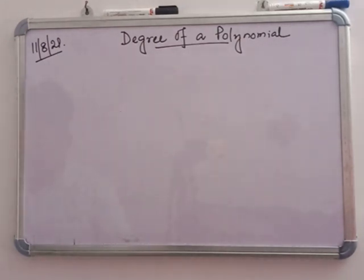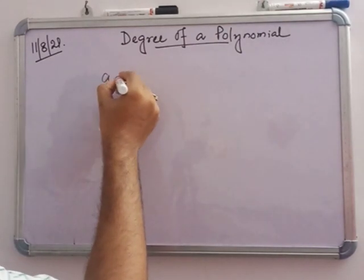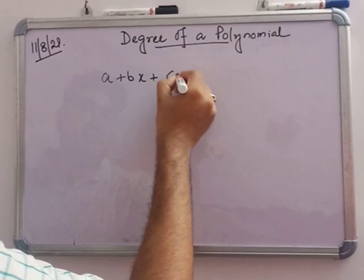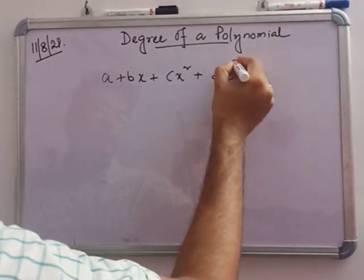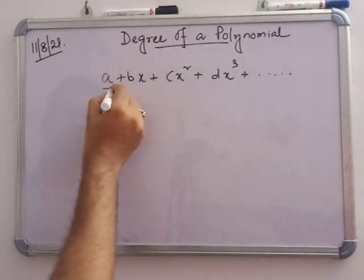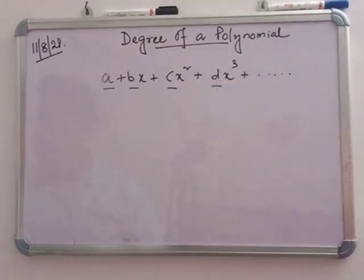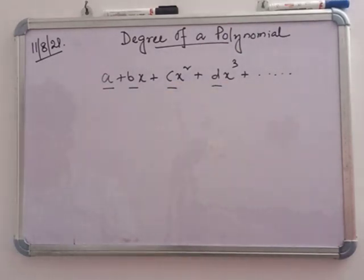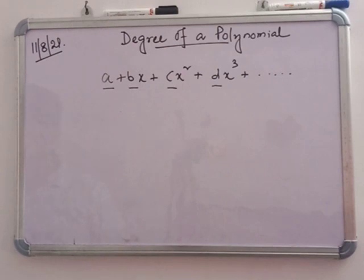An algebraic expression of the form A plus Bx plus Cx squared plus Dx cubed and so on, where A, B, C, D are constants and x is a variable, is called a polynomial in x. The highest power of x is called the degree of a polynomial.